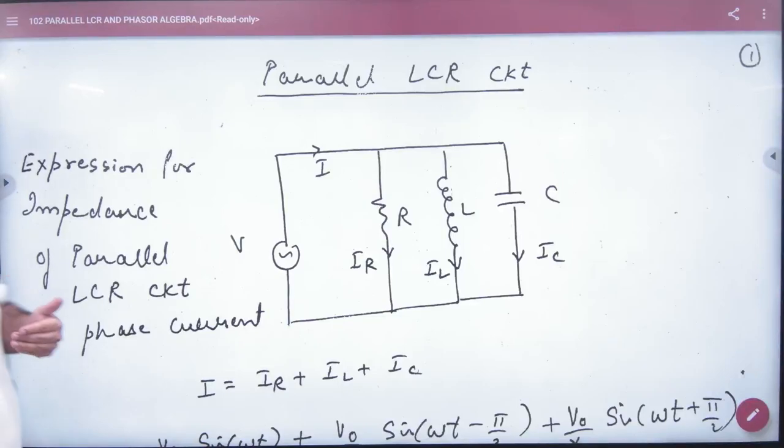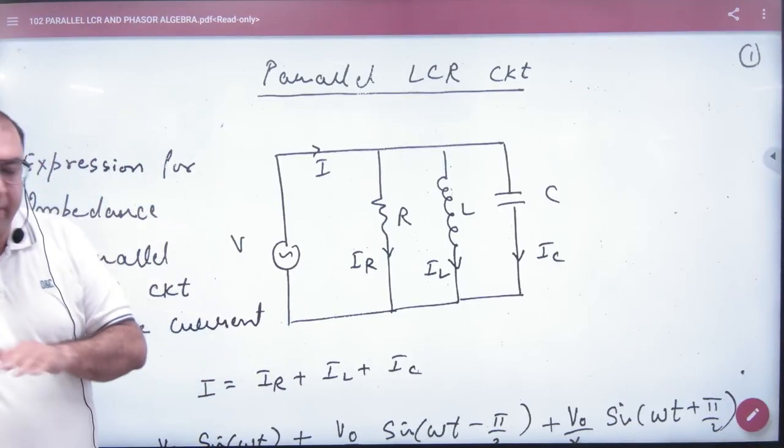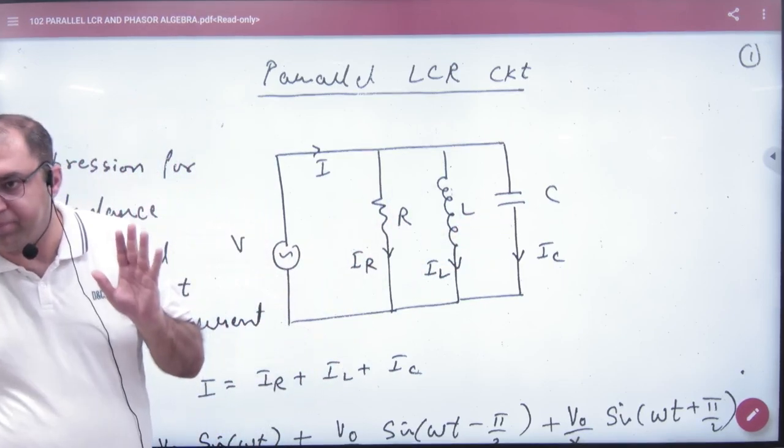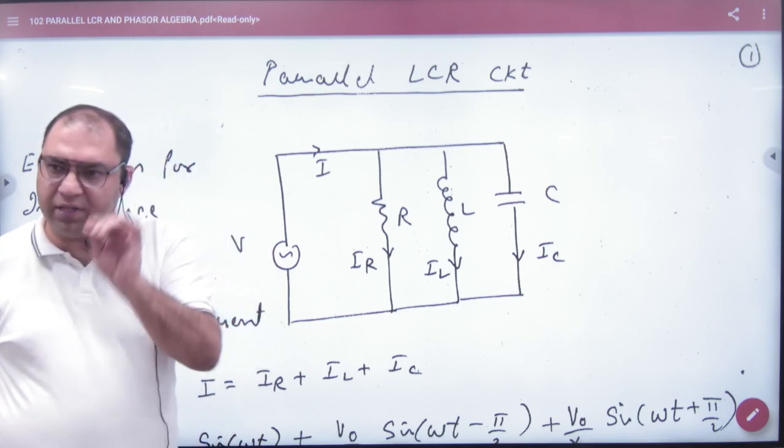In the parallel LCR circuit, first of all, R, L, and C are connected in parallel. AC is the supply.